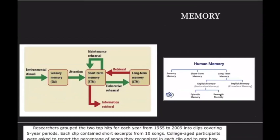So — memory. What do you need to know about memory? This figure over here on the left was taken straight from your content guide and honestly I couldn't find a better explanation of the process of remembering something. We get environmental stimuli — literally anything that ever happens — and it goes into sensory memory. That's iconic and echoic memory.